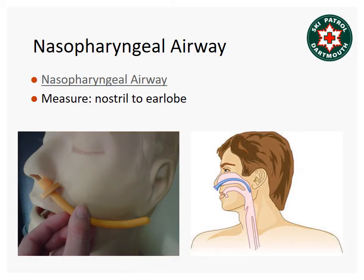For a patient who may have a gag reflex, or if you tried to insert an OPA and found a gag reflex or increased level of responsiveness, the adjunct of choice is the nasopharyngeal airway — NPA, nasal airway, nasal trumpet, or nose hose. This is great for patients who may be under the influence of a nervous system depressant and are on the low end of the AVPU scale, not really maintaining their airway and keep snoring or snorting. For the NPA we measure from the nostril to the earlobe. These come in different lengths, diameters, and styles — you want the correct length and the largest diameter that will fit in the patient's nostril. Some have a length adjustment slider; if not, you can put a safety pin through it.